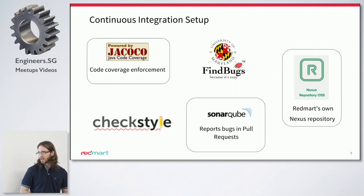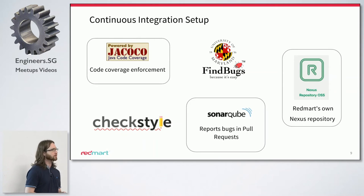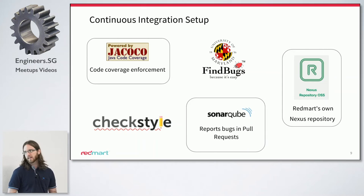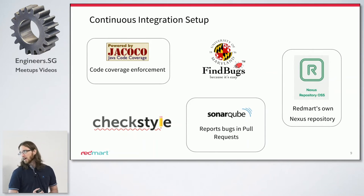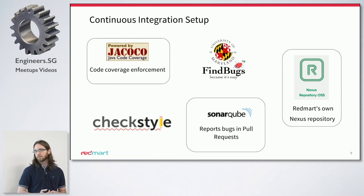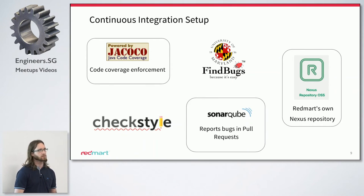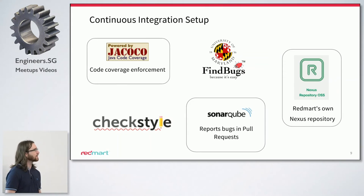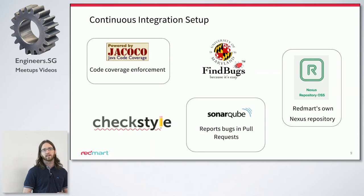Sorry if you feel otherwise. SonarCube is a plugin that we use to comment on our GitHub pull requests, and that again finds any obvious flaws that are missed by the other three. And then the last piece — Surya mentioned that we have our own Nexus repository, but that's hidden behind a firewall. So for the continuous integration server to actually be able to build our builds, it needs to SSH into the firewall and be able to access things, so there's some scripting setup to allow that to happen.